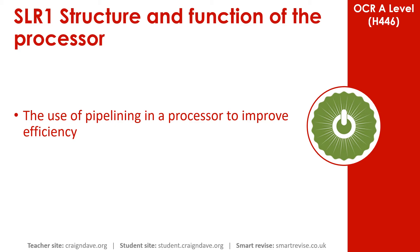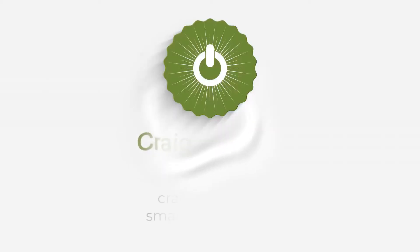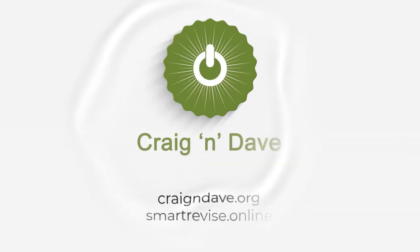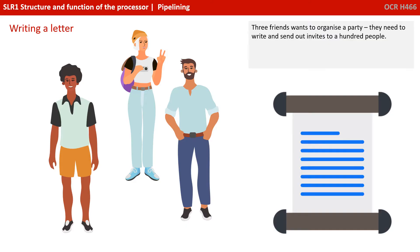In this video, we take a look at the use of pipelining in a processor to improve efficiency. To understand this concept, let's start by looking at an analogy of writing some invites.